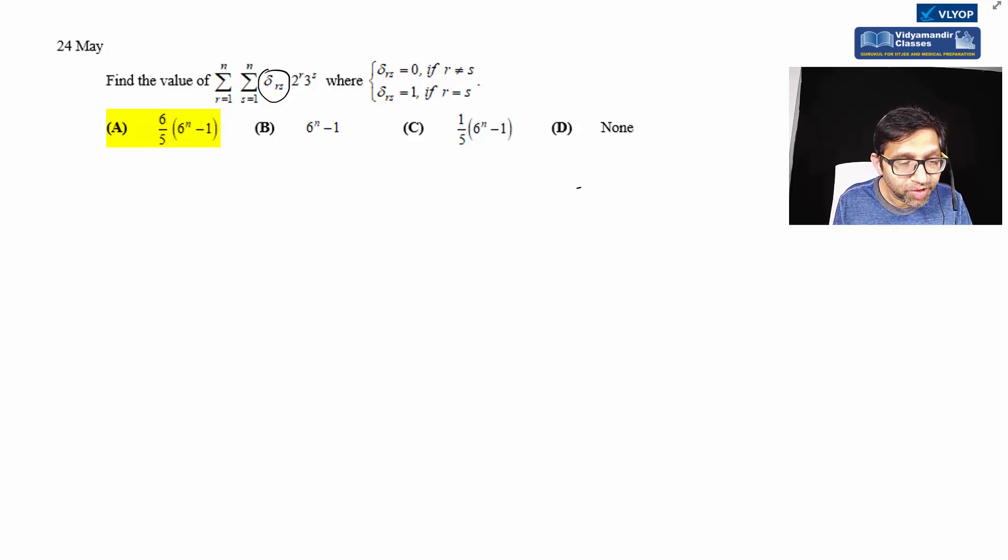Hi, this is a daily math problem for 24th May. This question is based on double sigma, so it goes into summation of series. The question involves disconnected double sigma - disconnected means there's no relationship between r and s.